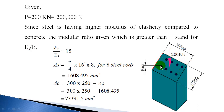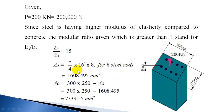Now calculate the area of cross-section of both steel and concrete that supports the load. For one steel rod, the area is π/4 × d² = π/4 × 16². Since there are 8 rods, multiply by 8: π/4 × 16² × 8, which gives an area of cross-section of steel equal to 1608.495 mm².